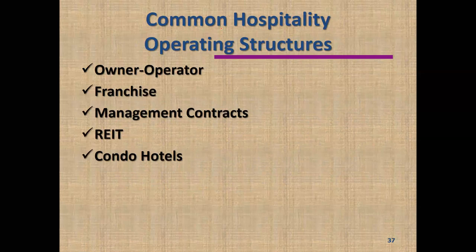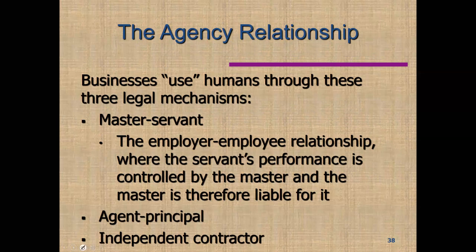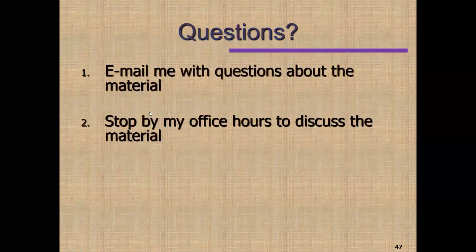We've now talked about all five common hospitality operating structures: the owner-operator situation, franchises, management contracts, REITs, and condo hotels. If you have any questions about operating structures, please feel free to email me, and I encourage you to come by office hours to discuss this in more detail. We will have a third lecture on Chapter 3 to finish the remaining material. Thank you for your attention and have a wonderful day.